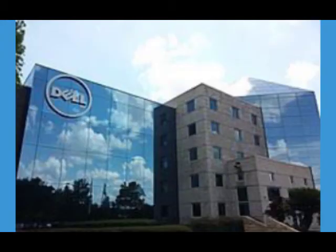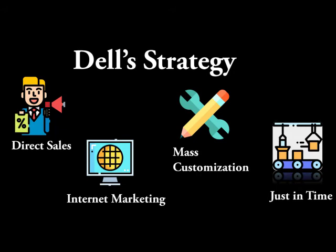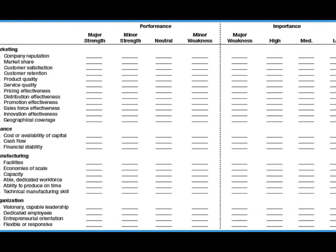Dell used its strength to maximise its opportunity. Dell's business strategy combined direct sales, internet marketing, mass customisation, and just-in-time manufacturing to minimise delivery time and capitalise on the market opportunity. Businesses can evaluate their own strengths and weaknesses using a form like the one shown on the screen. All we can do is play to our strengths and improve on our weaknesses until they become our strengths.